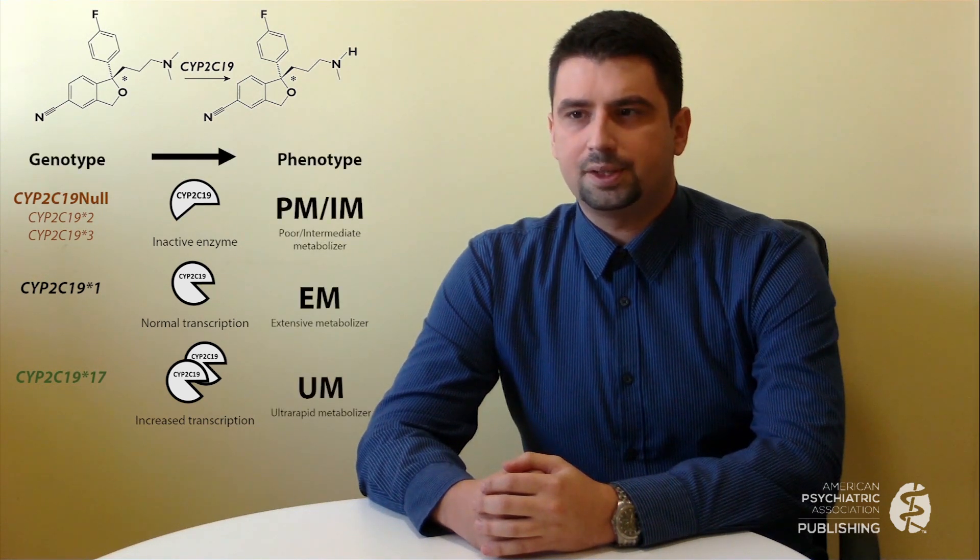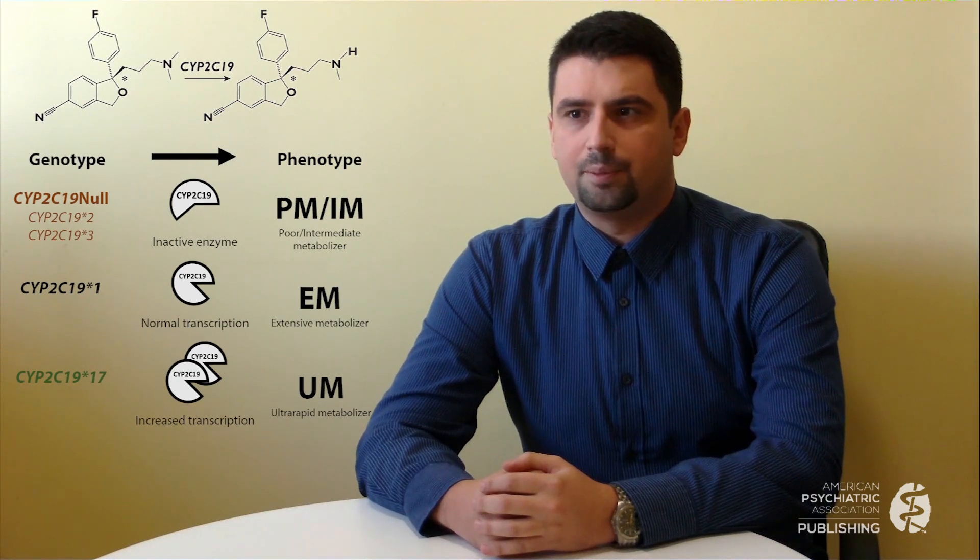The CYP2C19 isoform of cytochrome P450 enzyme is responsible for the metabolism of escitalopram. The CYP2C19 gene is polymorphic, and common variant alleles cause either a loss or gain of function of the enzyme. By changing enzymatic capacity, the CYP2C19 genotype affects escitalopram metabolism.